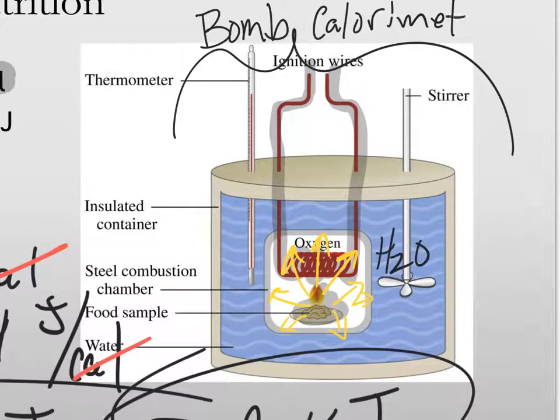Calorimeter meaning it's measuring calories. So what you see here is that there is a thermometer, and so they can measure the temperature change before ignition and then after ignition.